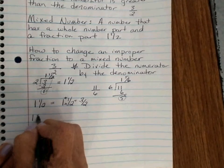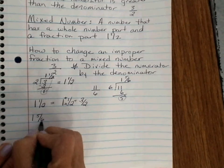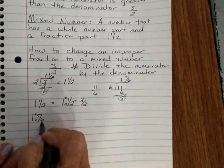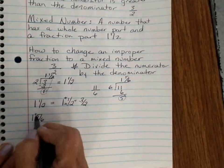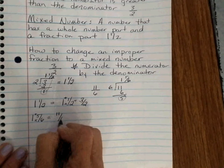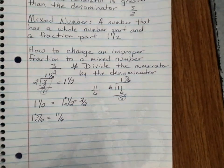1 and 5 sixths. We would multiply 1 times 6 and add the 5. 1 times 6 is 6. 6 plus 5 is 11 over 6. We just go backwards.